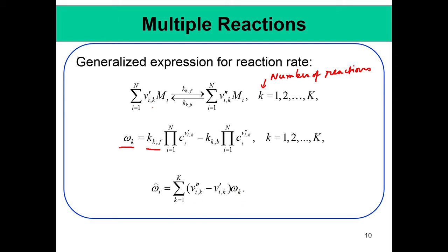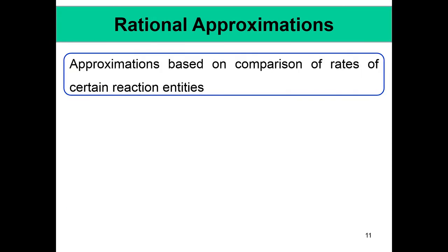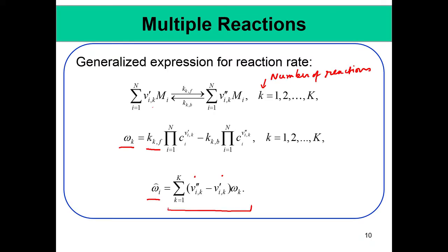Using this information and the previous relations, you can find the rate of change of the i-th species, given by ω̂_i, summed over all reactions. The contribution to production or consumption of species i must be taken from all reactions, because species i can appear in many reactions. If it does not appear, the stoichiometric coefficients will be zero, giving no contribution. This is the power of the generalized expressions.